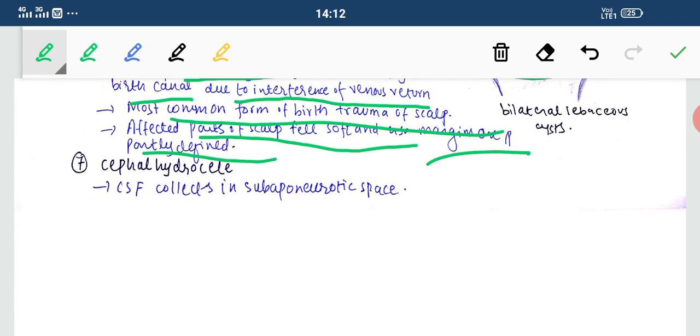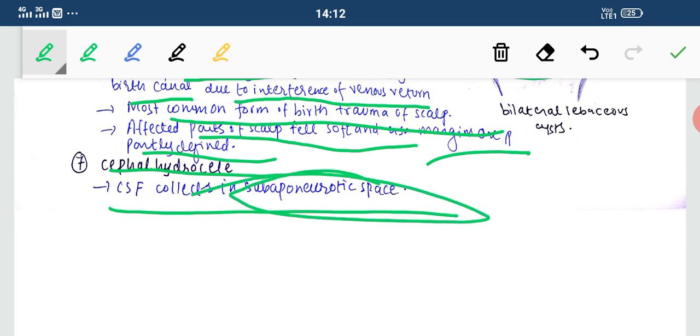The last one is cephal hydrocele, which is the CSF collection in the subaponeurotic space. That's all for this lecture. These are the clinicals done. The emissary vein is another thing that is left, which is of utmost importance. That will also be covered in the next lecture. Apart from that, the scalp is completed. Watch all the lectures of the scalp.